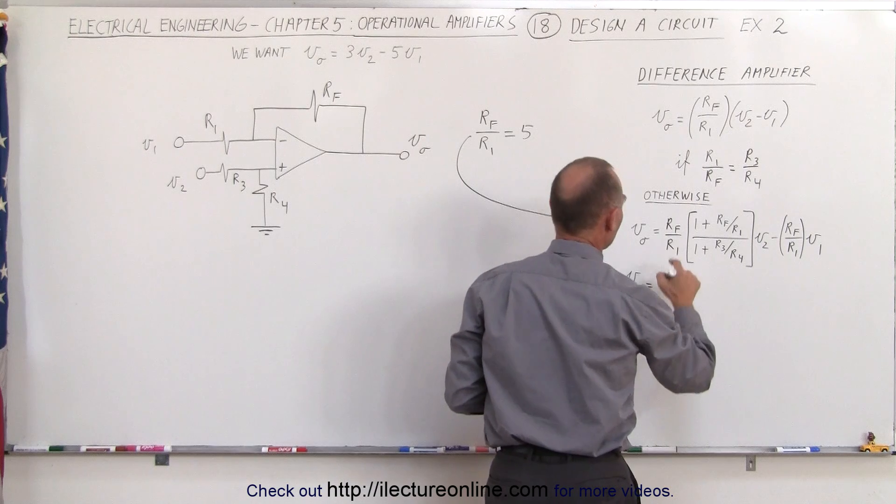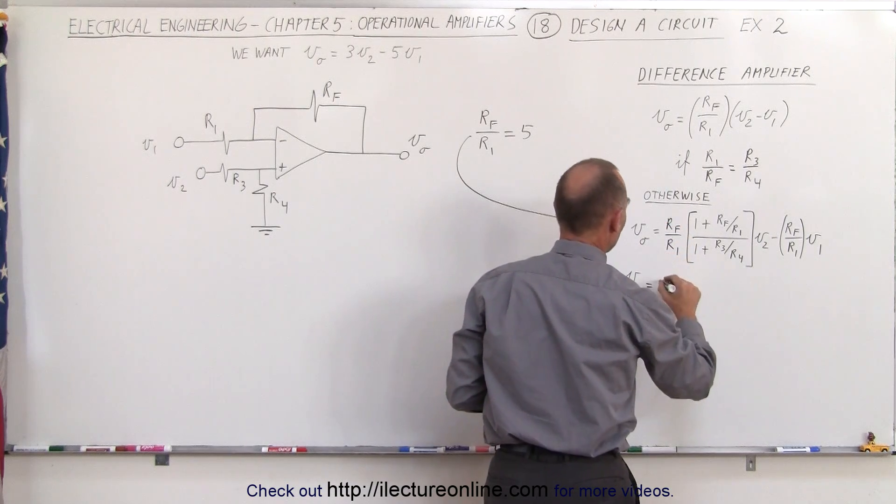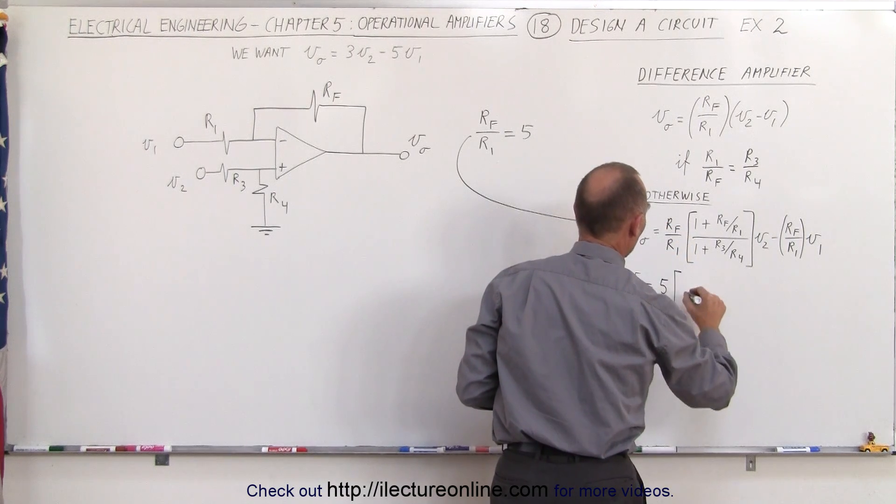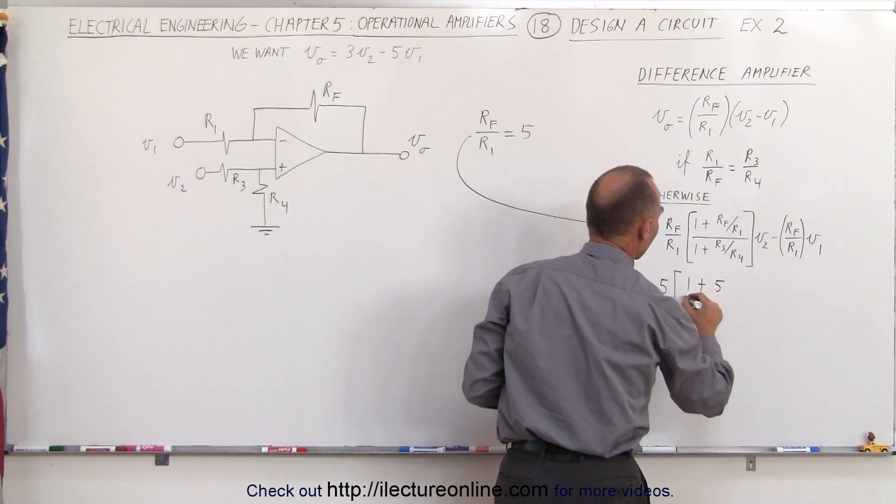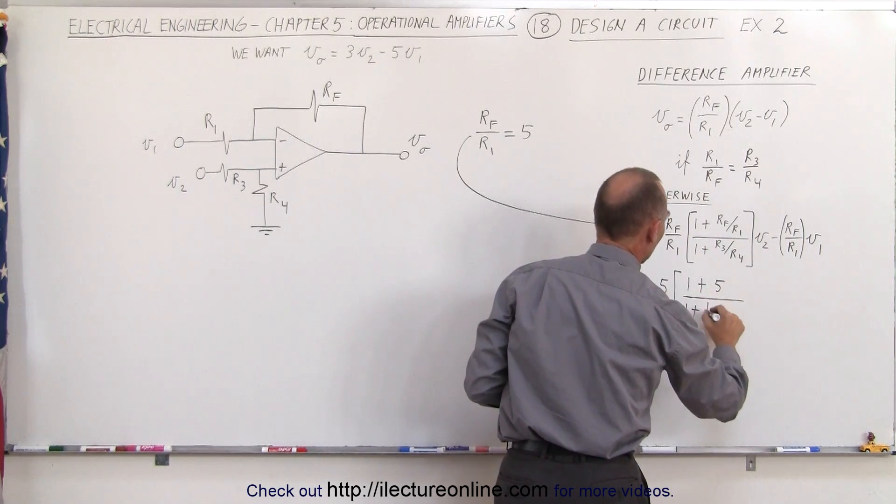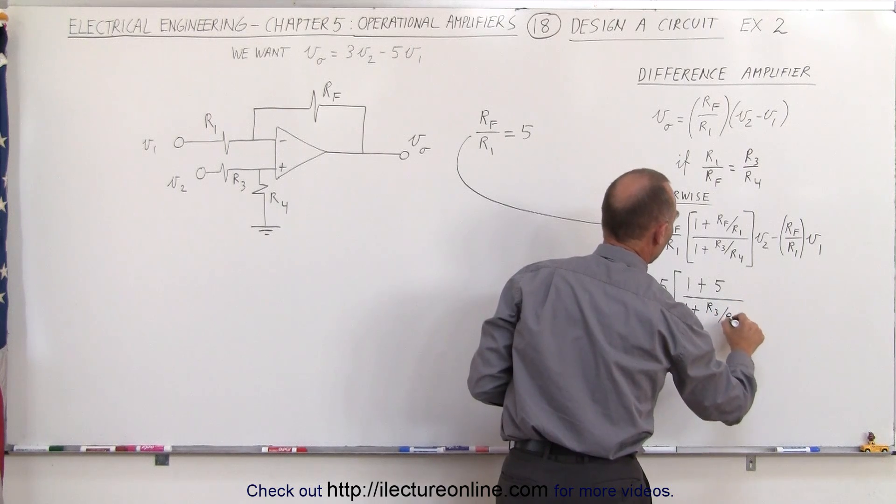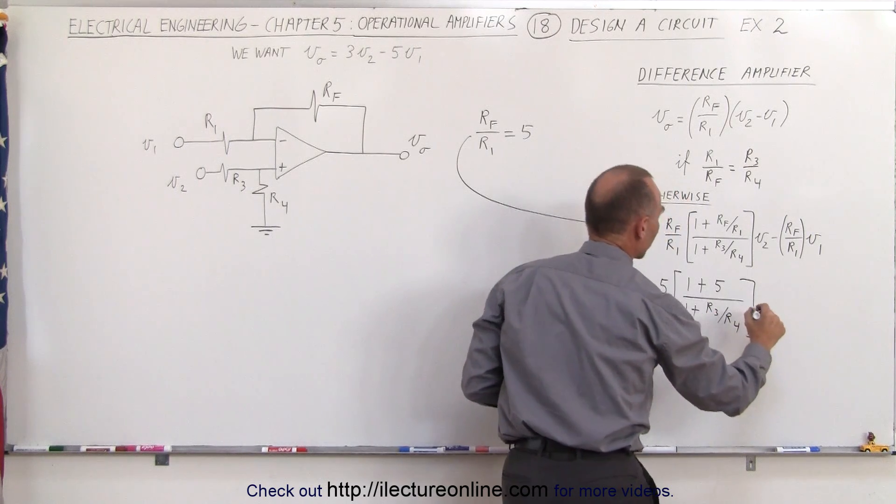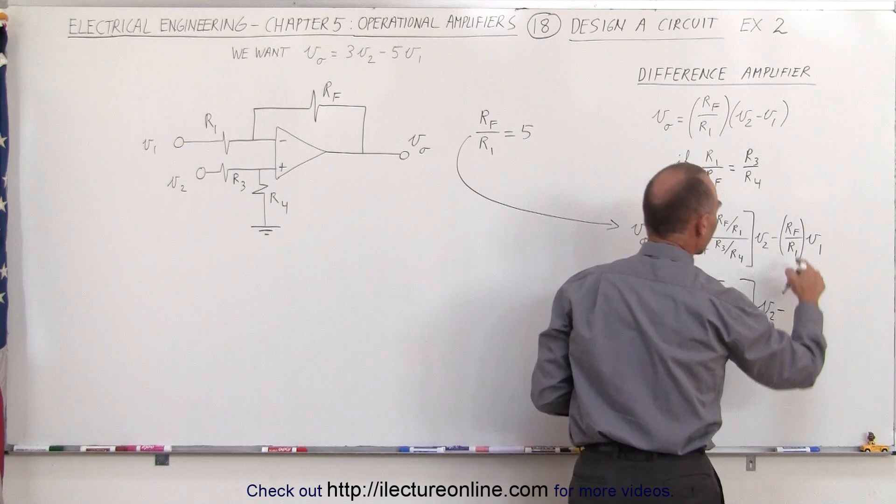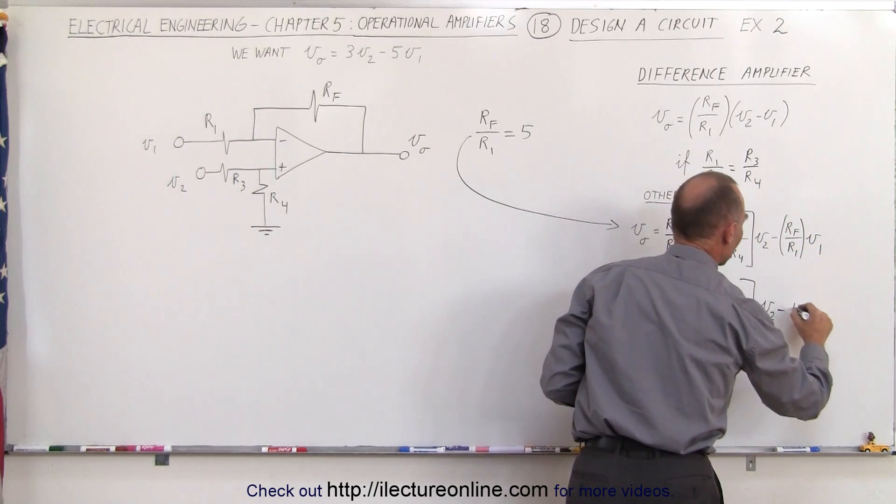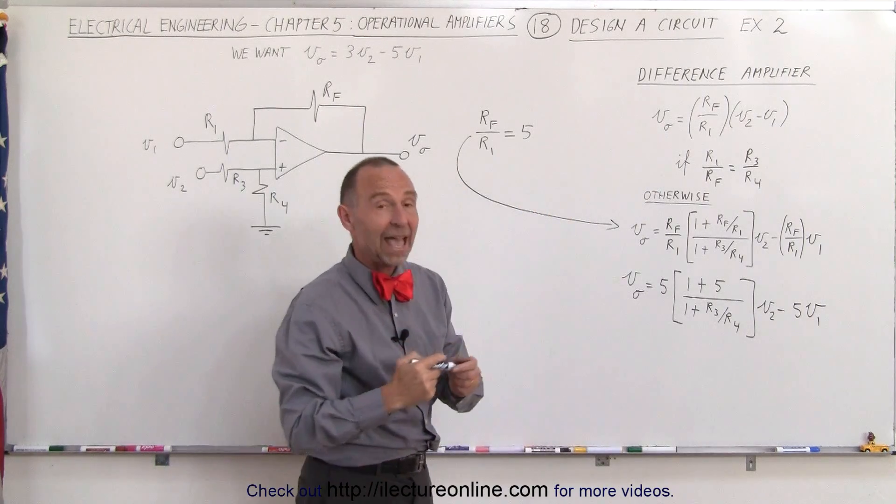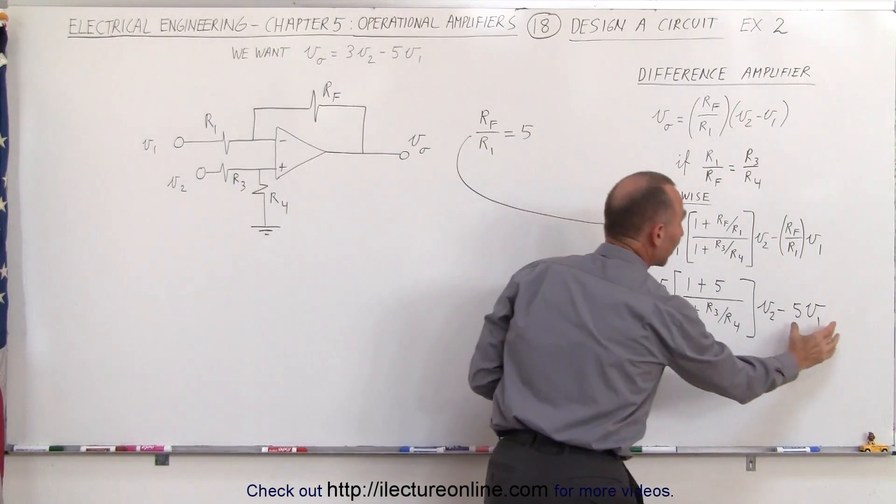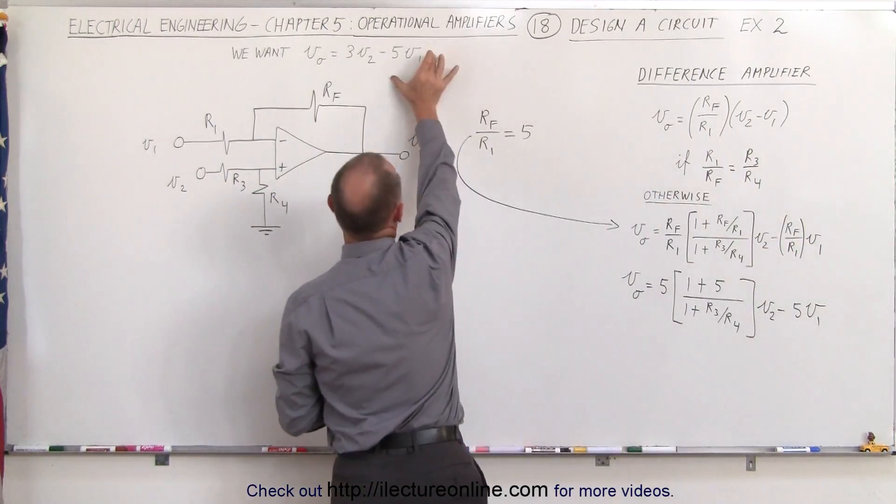We get V output is equal to 5 times the quantity 1 plus RF divided by R1 is 5 divided by 1 plus the ratio of R3 divided by R4, times V2 minus RF divided by R1 which is 5 times V1. Notice we already have half the result. We wanted a minus 5 V1 which is exactly what we have.